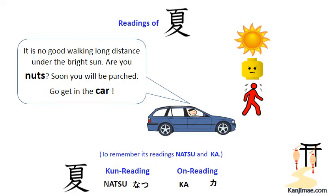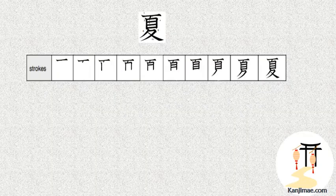Let's think that a friend of such a walking man surprisingly says, 'It's no good walking under the bright sun. I do not — go, get in the car!' The bold written words in the speech balloon give us the kun and on readings, which are Natsu and Ka respectively.